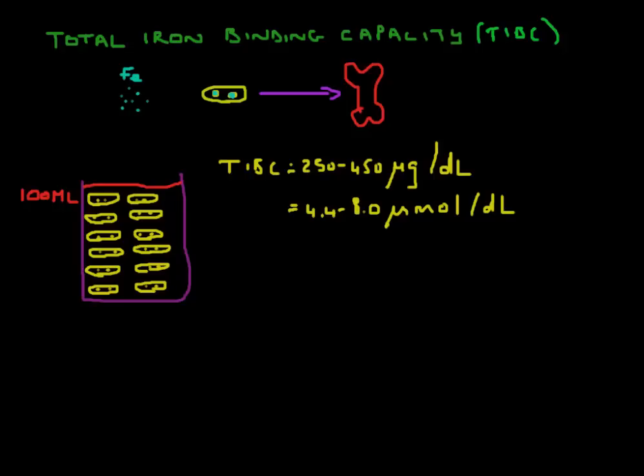Now what is serum iron then? Serum iron is simply the total amount of iron that is actually bound. So let's say those molecules of iron is bound, and these as well. You can see that's 4 out of a total of 12 here, so that's about one third of the total transferrin molecules are bound with iron. That is called the serum iron, or we can just say SI. And that usually is then somewhere between 50 to 150 micrograms per deciliter, or about 1.8 micromoles per deciliter. So the serum iron reflects the total iron that is actually bound to transferrin.